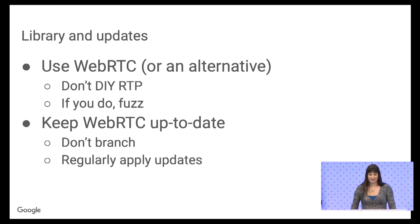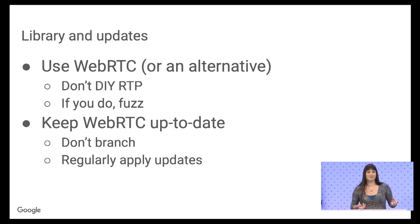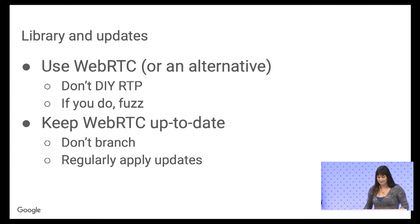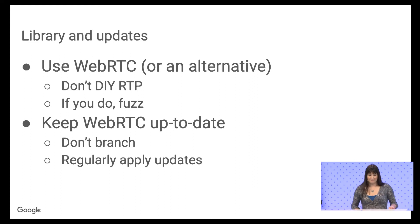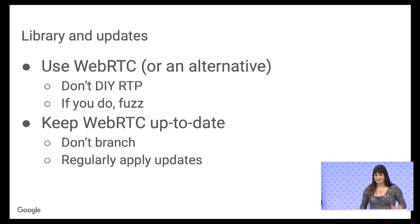Also, keep your WebRTC up to date. There are always vulnerabilities being found in it, so when they're found it's important to update your version — otherwise you're giving free bugs to attackers; they don't even need to find one. Also, avoid branching. As soon as you branch, you have to independently apply every update instead of just plugging in the new binary. I recommend using the binary and watching the WebRTC discuss list for when vulnerabilities are announced, then update accordingly.